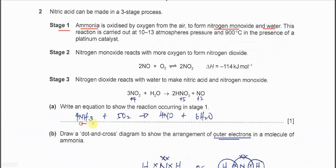So you just put ammonia with O2 to form NO and water. After that you just balance it. So you get this equation.